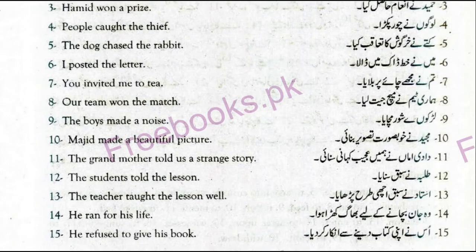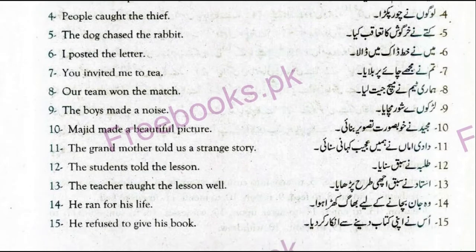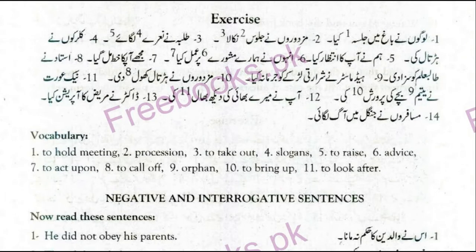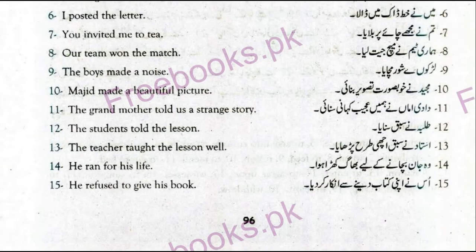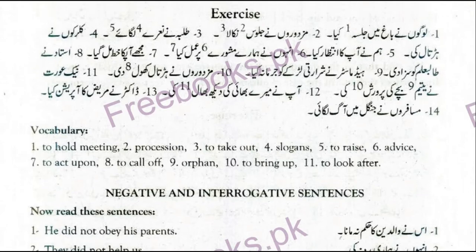He refused to give his book. All these examples are given over here. Now we come to the exercise. First of all we have to use the subject, then the second form of verb, then the object, because we are doing the affirmative sentences. After that we will do the negative and interrogative sentences. Simply, you have to use the second form of verb.